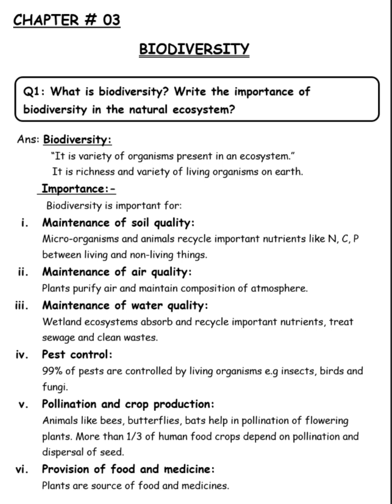Pollination and crop production. Animals like bees, butterflies, and bats help in pollination of flowering plants. More than one third of human food crops depend on pollination and dispersal of seeds, which animals such as bees, butterflies, and bats perform.